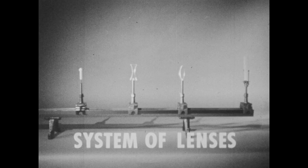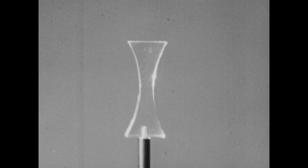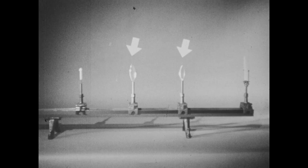To further illustrate the system of lenses, we'll try two convex lenses combined. We'll replace the concave lens with a convex lens. Now, with two convex lenses, the image we obtain is inverted and magnified, a real image.